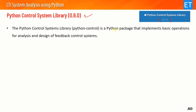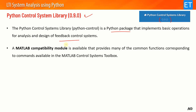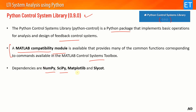Now let's look at the Python Control System Library. This is the library used to implement LTI system analysis. The current version is 0.9, which is the latest. The Python Control System Library is a Python package which implements basic operations for analysis and lets you design various feedback control systems. One good thing is that it also has a MATLAB compatibility module, meaning the commands in the MATLAB compatibility module are similar to the commands used in the MATLAB Control System Toolbox.